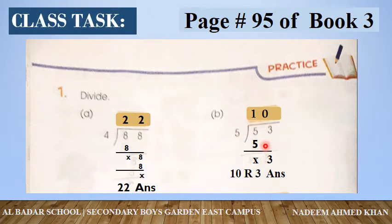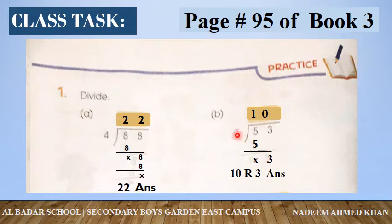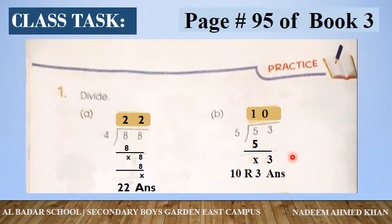B question ہے: 53 کو 5 سے divide کرنا ہے۔ 5 ones are 5 — 5 لگا دیجیے۔ 5 میں سے 5 subtract کریں — کچھ نہیں بچا۔ 3 کو bring down کر لیا — یہاں 5 ہے اور 3 چھوٹا number ہے، تو divide نہیں ہوتا، اس لیے اوپر 0 لگائیں۔ 5 × 10 = 50، اور 53 میں سے 50 minus کریں تو remainder 3 آتا ہے۔ جواب: 10 remainder 3۔